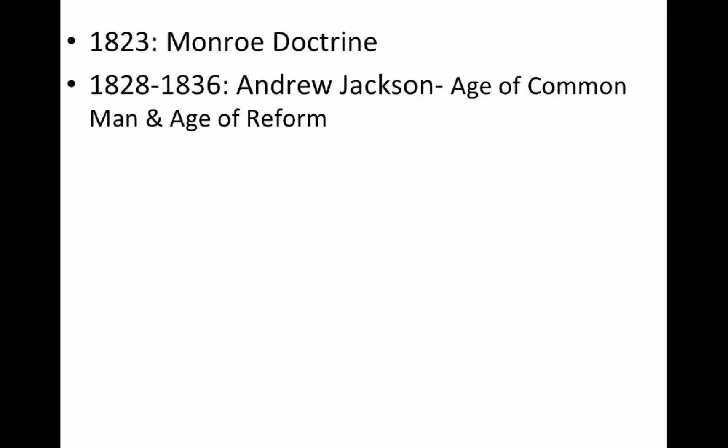A big moment is 1828, when Andrew Jackson is elected president — he takes office in 1829. Jackson symbolizes the age of the common man. There's also an age of reform going on with a lot of different reforms in the early 19th century. A big one is the nullification crisis of 1833 — Jackson battling the state of South Carolina over tariffs. And in 1838, you have the Trail of Tears, the forced removal of the Cherokee people.